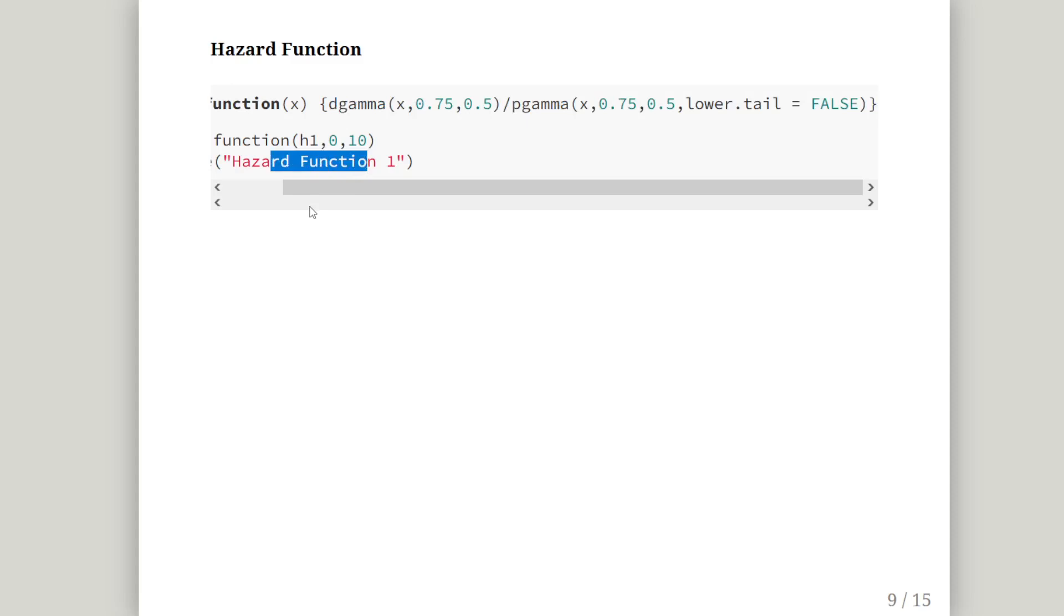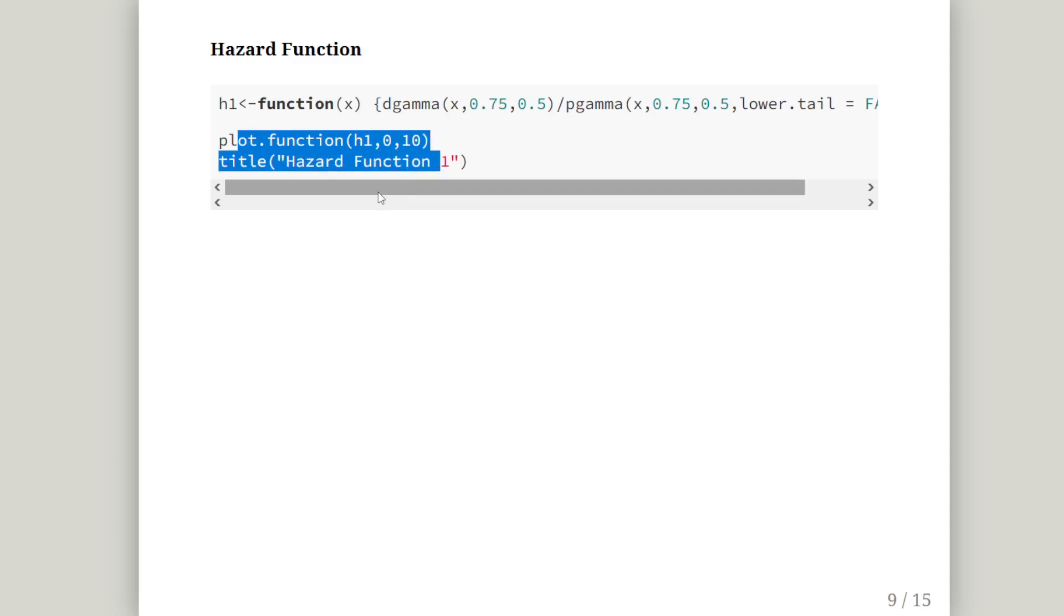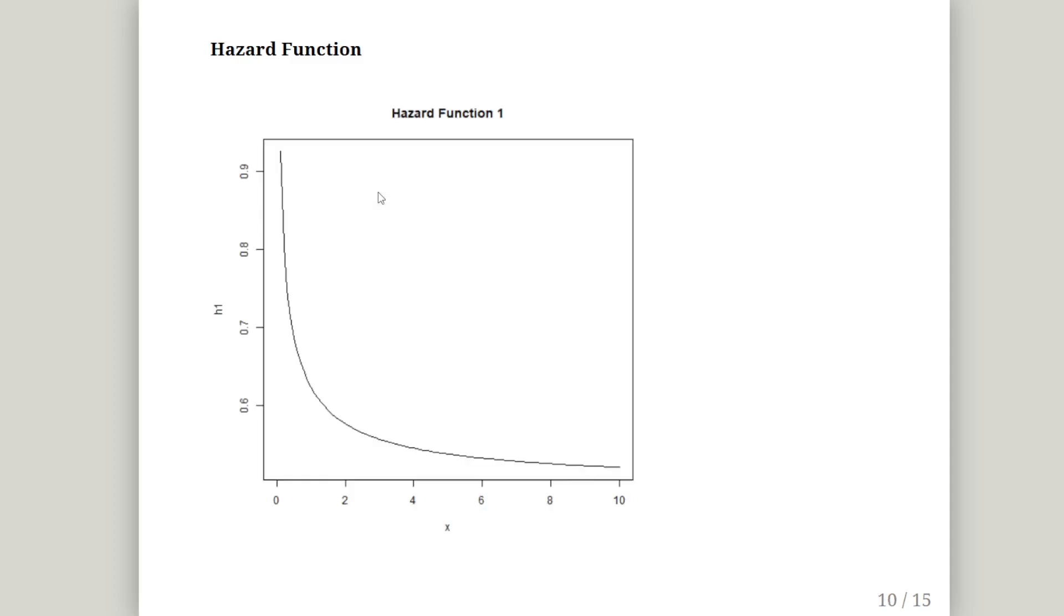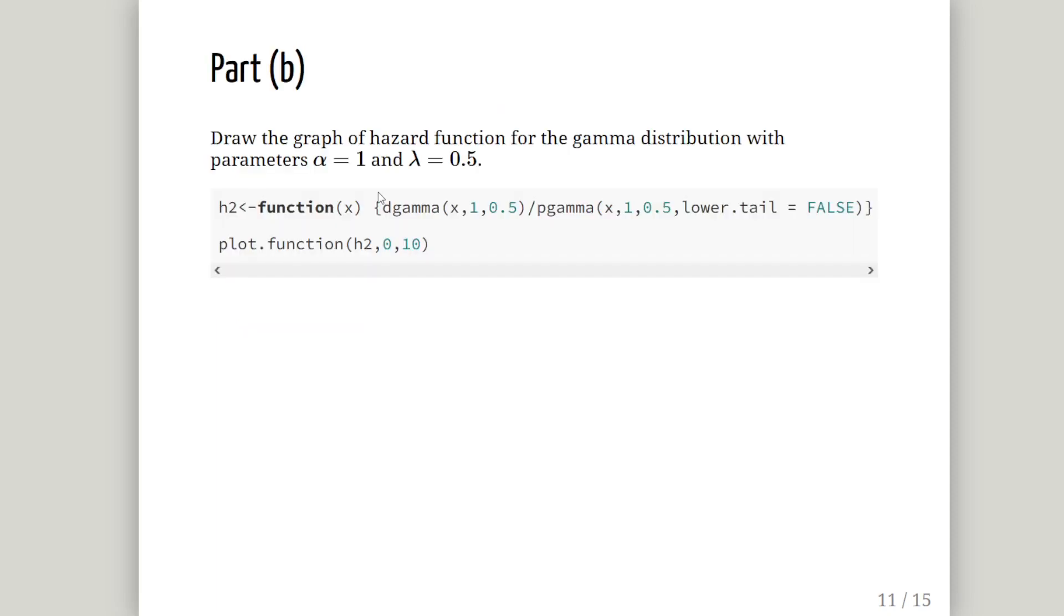The ratio is our hazard function. So plot that function and we'll give it a title. Hazard function 1. That is our first of our three hazard functions. Let's move on.